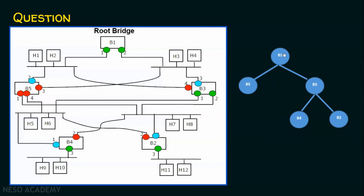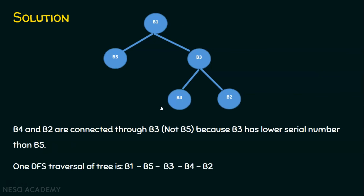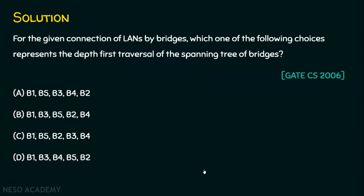Now when we apply depth first traversal, we get the answer. In DFS, we start with the root, then go deep. First B1 is visited, then B5 is visited. There is no more depth in B5, so we go back to B1 — already visited — then come to B3, then B4, then B2. So the answer is B1, B5, B3, B4, B2, which is option A.